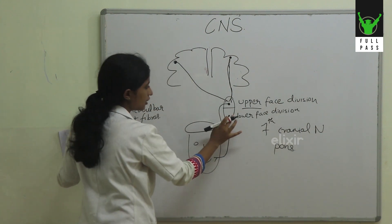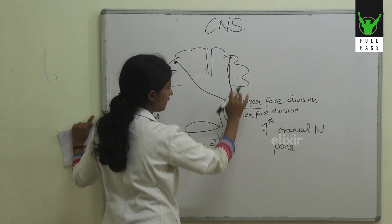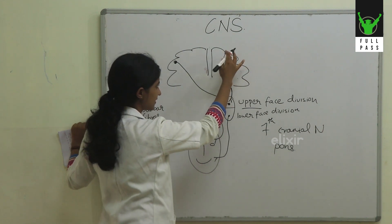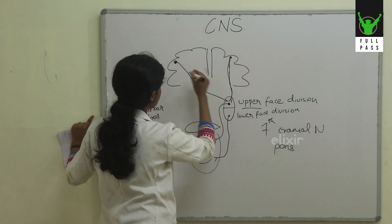For the lower face division, however, we do not have upper motor neuron fibers from the same cerebral hemisphere — it receives only contralateral upper motor neuron supply.